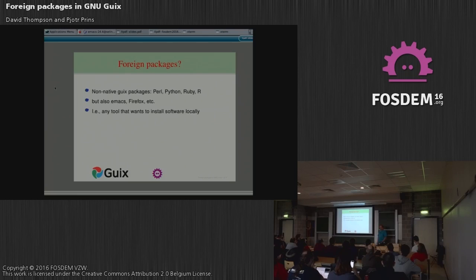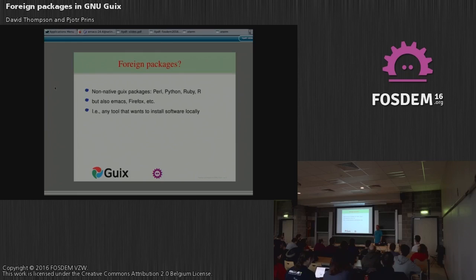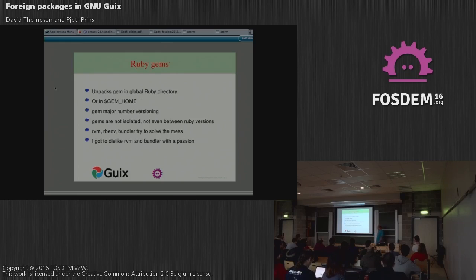There are a lot of them. A lot of these solutions are written because the underlying software distribution doesn't do the job for them. So for Firefox, if you want to install a plugin, they could have used Debian, but they didn't. Ruby gems I'm going to treat specially as an example because I'm very familiar with it and I wrote the implementation together with David for Guix.